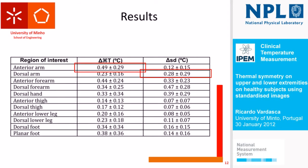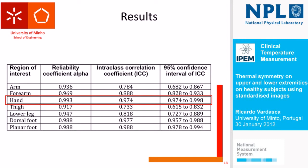The results showed that the largest difference in mean temperature was in the entire arm, while the largest difference in standard deviation was in the forearm — making it the least symmetrical region in the arms with the biggest differences between regions of interest. This also applies to the legs. These results are based on regional views rather than total body views. I also examined reliability and repeatability of the measurements, and the best results — the most consistent — were found in the hands.